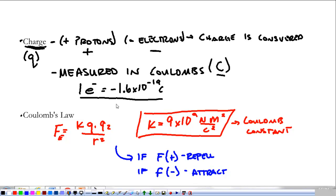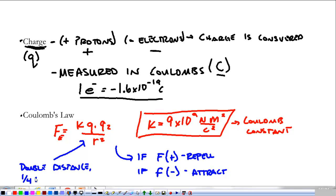If I put two positive charges in, they're going to repel, giving a positive force. We also need to remember what the over R squared means: if I double the distance, we go to one-fourth the amount of force we had before. If I triple the distance, we go to one-ninth the amount of force we had before. That's a very important thing to remember.